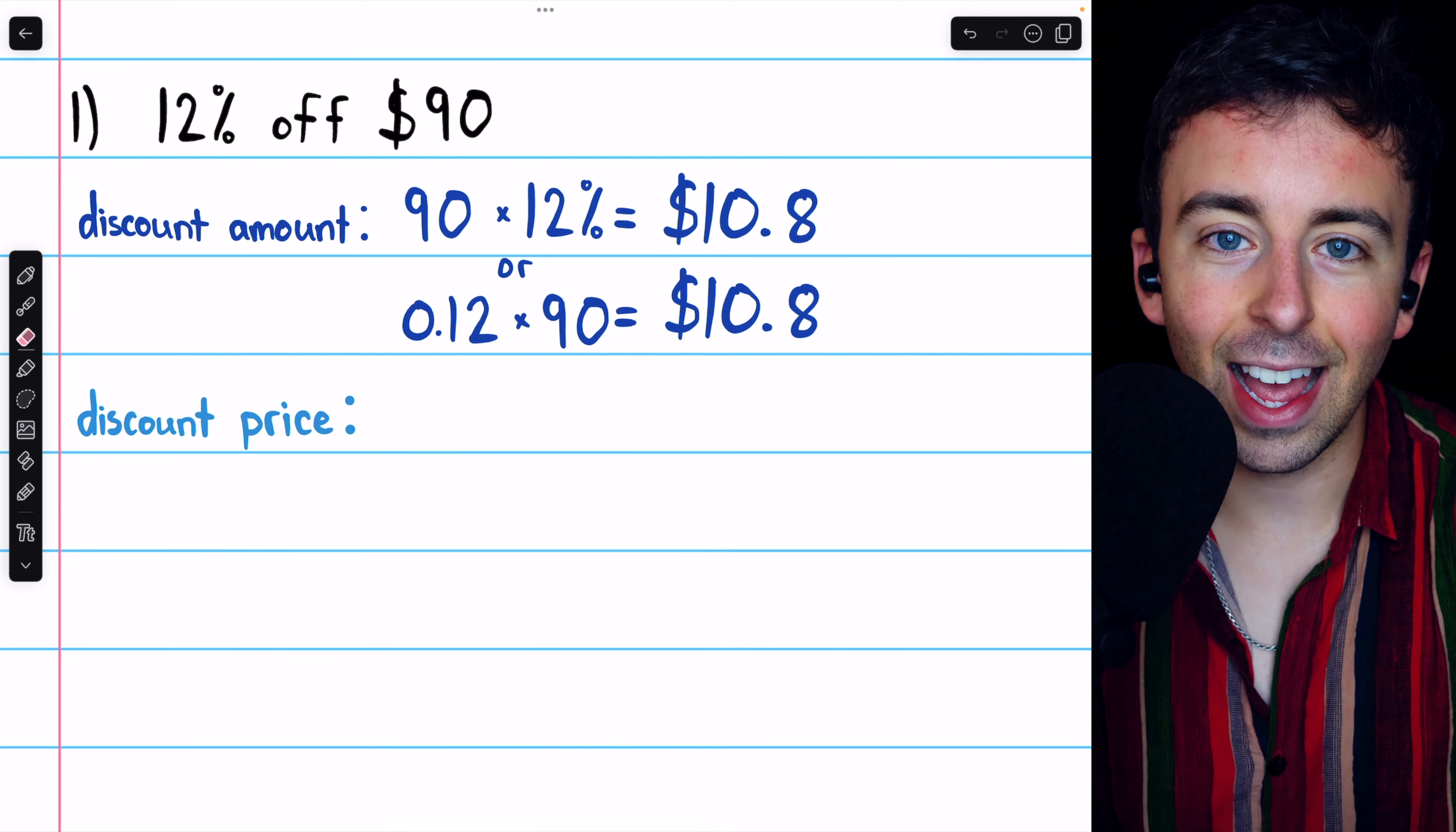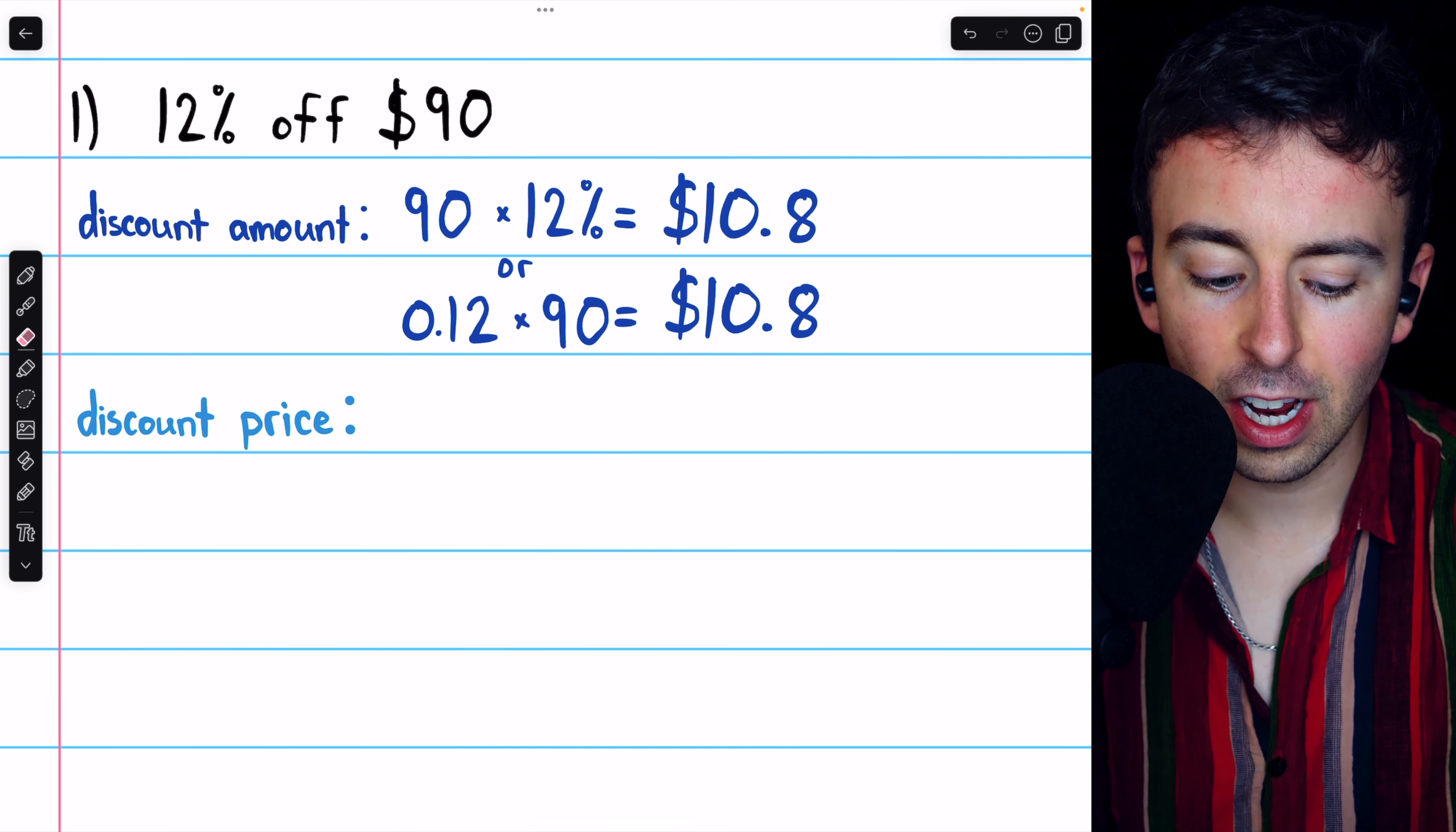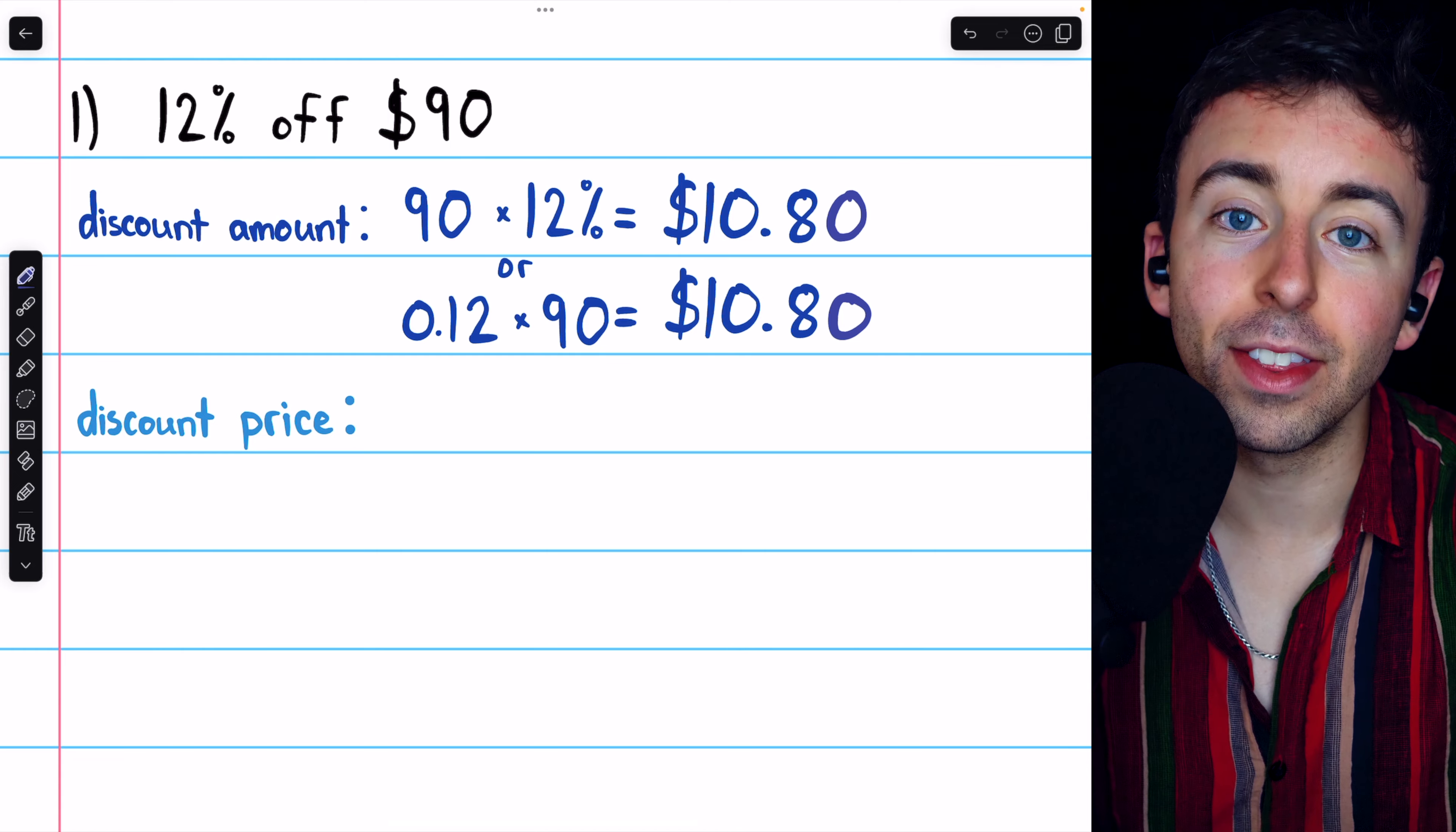We're not thinking about 0.8 as 8 tenths of a dollar. We're thinking about it as 80 cents, so we write the zero there.